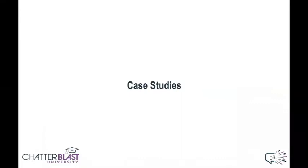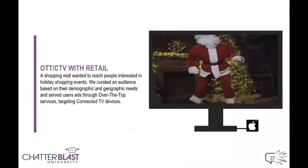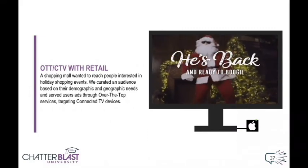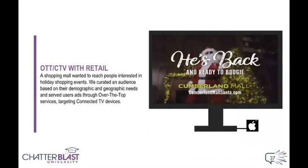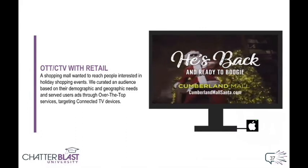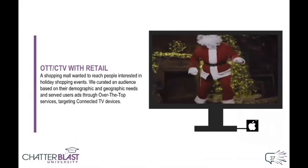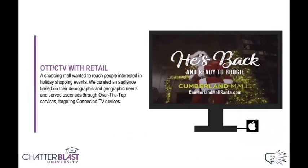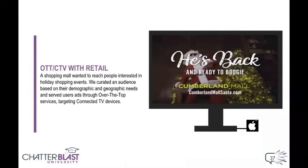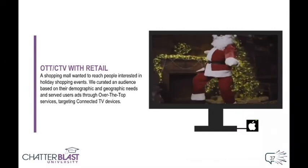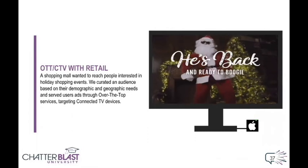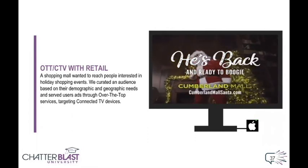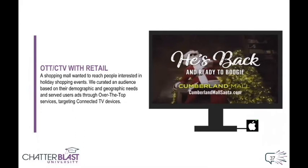So you know the basics, you know how it works, and you know how you're going to run some campaigns — but how does it perform in real life? This winter, a shopping mall group wanted to reach people interested in holiday shopping events. We set up a demographic audience for them and geofenced several large areas around each mall, targeting ads specifically to connected TVs, delivering ads through OTT apps and services. Overall, the mall's website saw a lift in organic and direct search and saw an increase in mall foot traffic as the campaign went on, and we were able to identify new audience opportunities for the shopping mall.